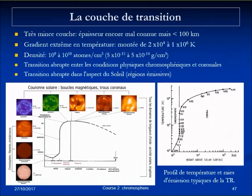At the very top of the chromosphere is the transition region — an extremely thin region. At the top of the chromosphere in the Lyman-alpha region with a steeper gradient, there is almost a vertical jump in temperature from 20,000 degrees to 1 million degrees — the coronal temperature — and then you have the corona. The density drops by only one order of magnitude, but it is this temperature gradient that characterizes the transition region.